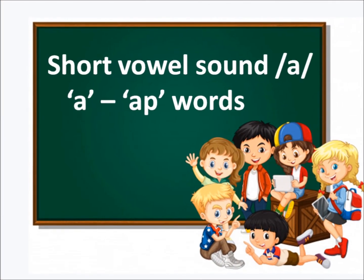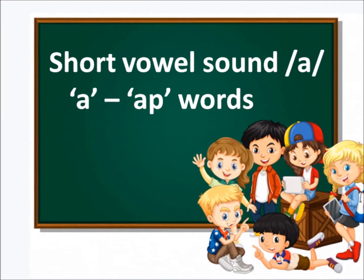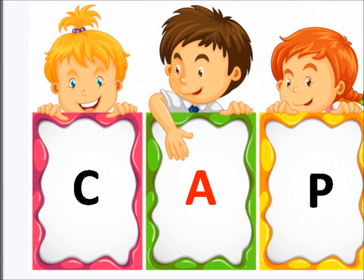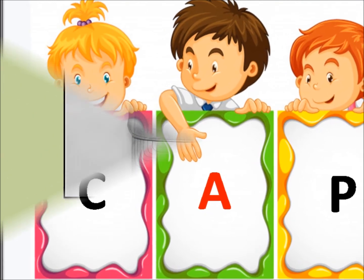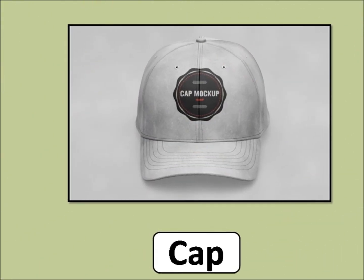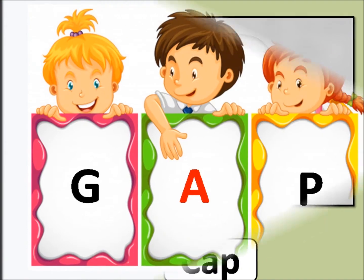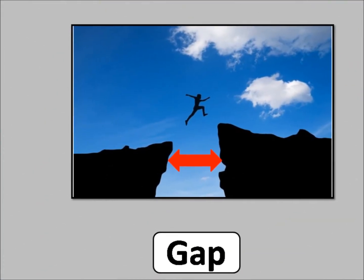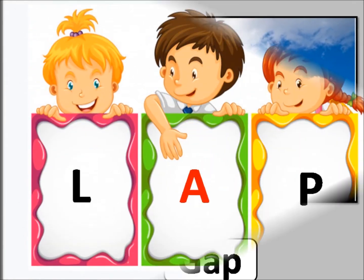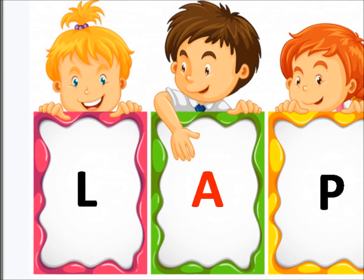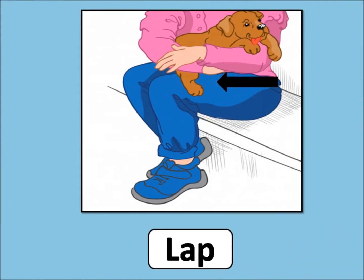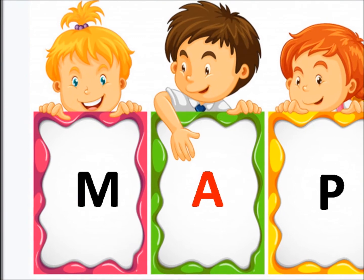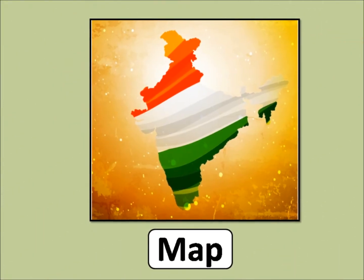Now AP words. It will sound like: A, P — Ap. C, A, P — Cap. G, A, P — Gap. L, A, P — Lap. M, A, P — Map.